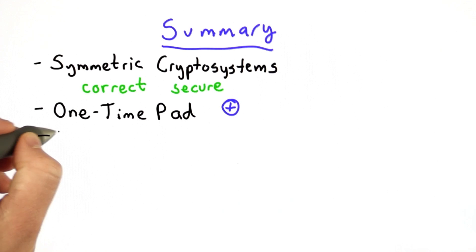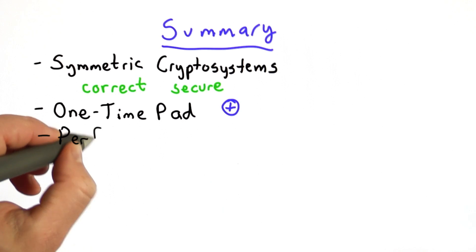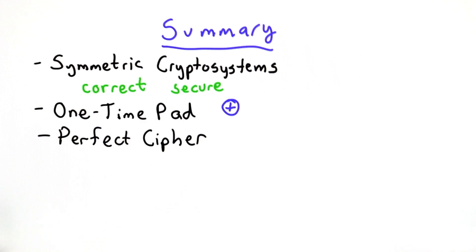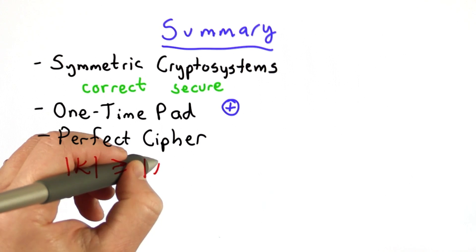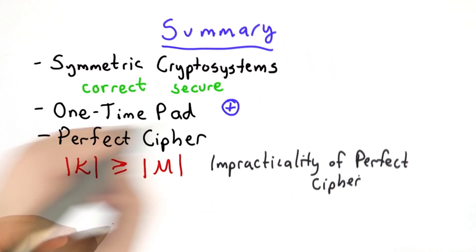We looked at a formal way to define what a perfect cipher means and prove that the one-time pad has that property. We also saw that in order to be perfect, a cipher has to be impractical, that the number of keys has to exceed the number of messages, and that means that every cipher that's used in practice is potentially breakable.